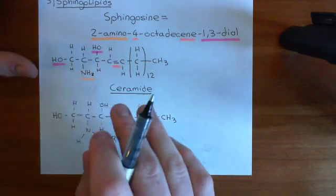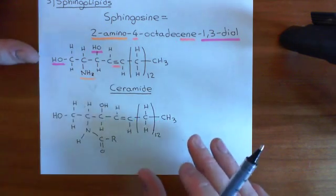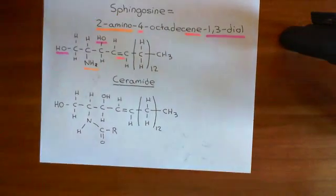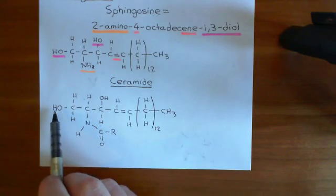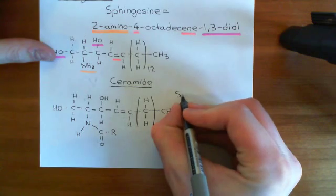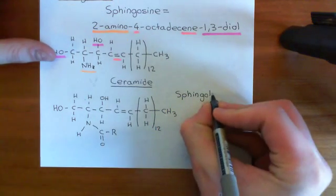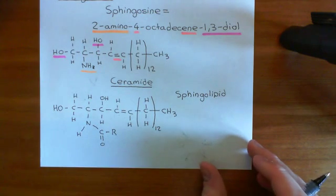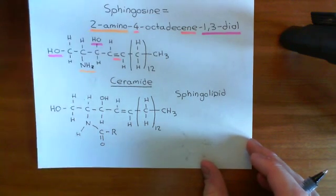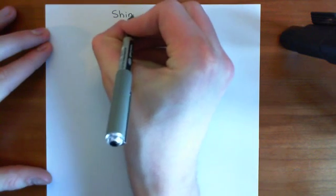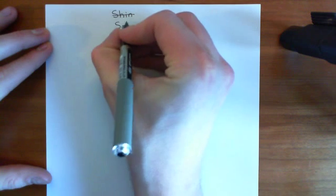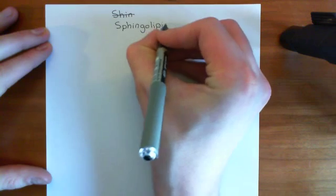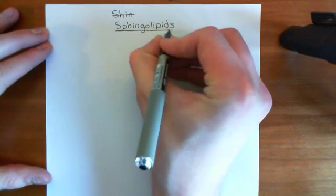From a ceramide molecule, you can now create what is known as a sphingolipid. Sphingolipids are all going to have something else attached onto the alcohol group off the first carbon. To create a sphingolipid, you substitute something off this alcohol group on the first carbon of the ceramide molecule. There are different classes of sphingolipids, and the different classes will correspond to different substitutions that you can make onto that first carbon's alcohol group.